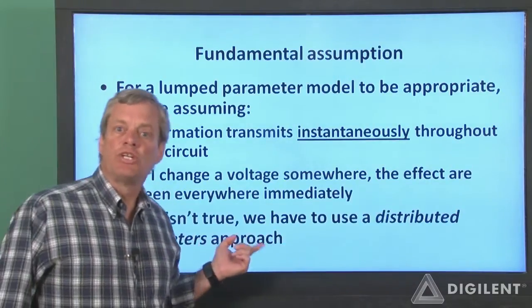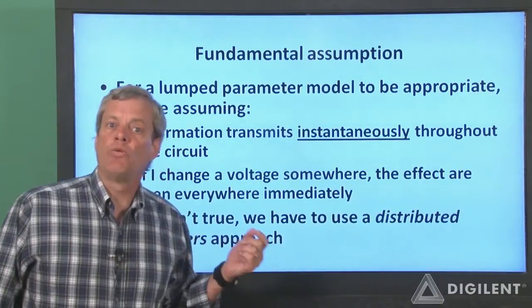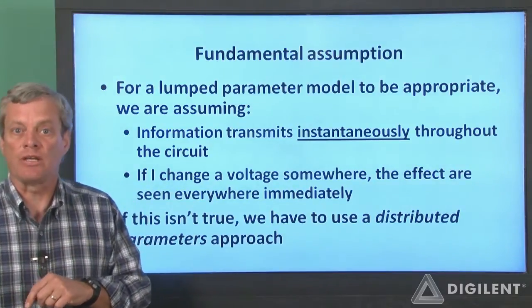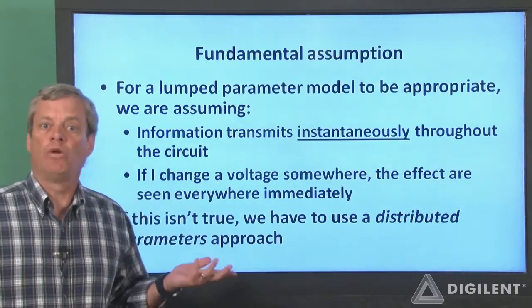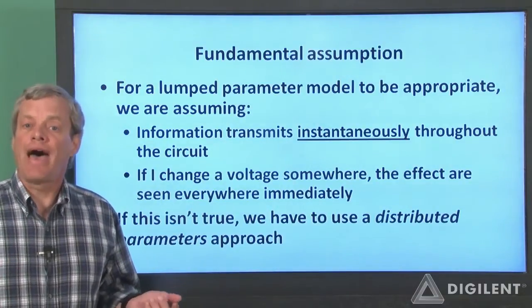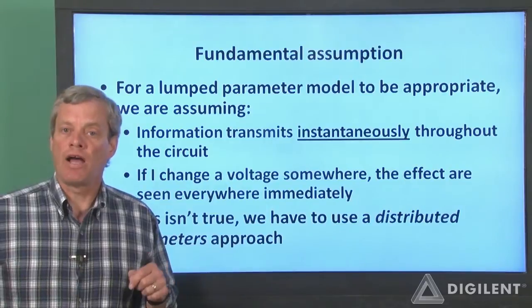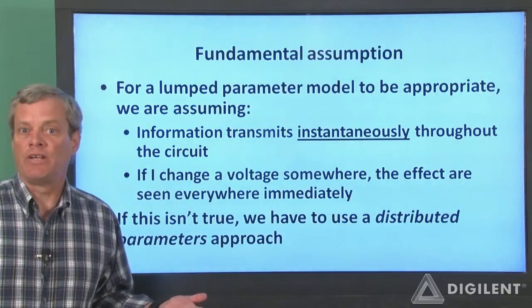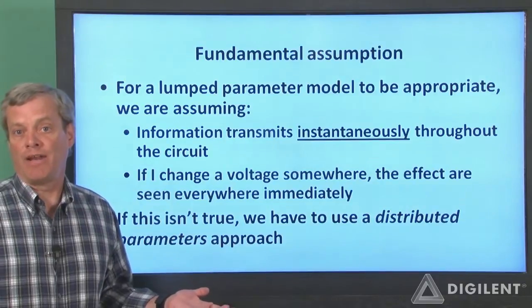In cases where this assumption is not true, we have to use what's called a distributed parameters model of the circuit. A distributed parameters model will always be more accurate than a lumped parameters model, but the mathematics we have to deal with is a lot more complicated. Quite often, the improvement in accuracy is so minute that it isn't worth the extra mathematical complexity. So what does a distributed parameter system look like? Here's my example of a distributed parameter system: a slinky.